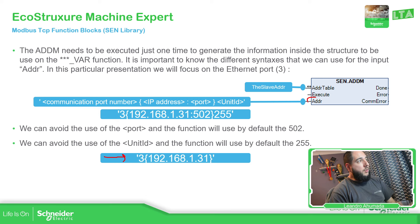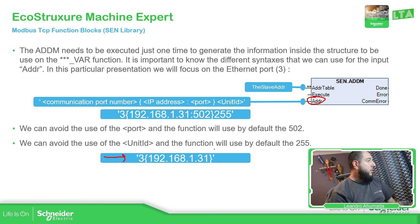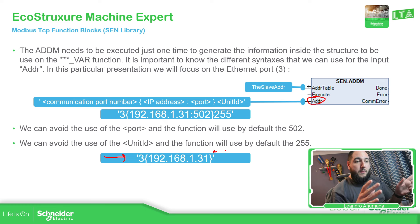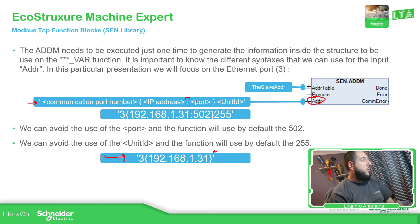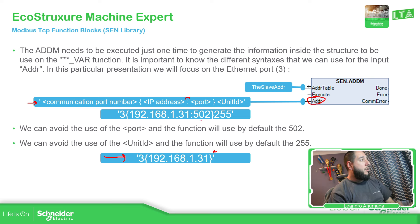The input of this one is a string, so we just need to use the single quotes in order to enter the port and the IP address. If you need a specific communication using a specific port and a specific unit ID, we have the possibility to define that. The generic format is: communication port number, IP address, two dots, and in case you want to use an additional port and unit ID next to it. By default, we have port 502 and unit ID 255.